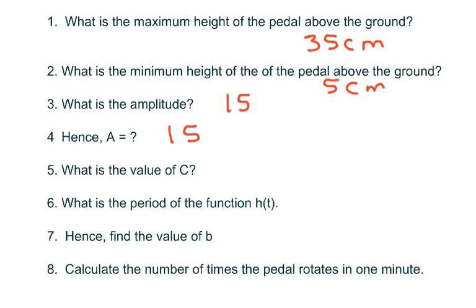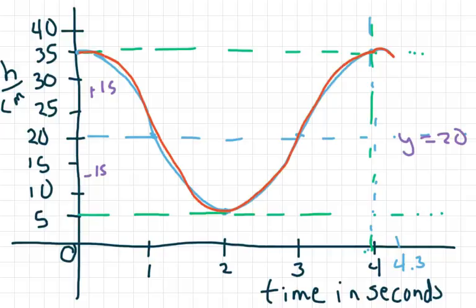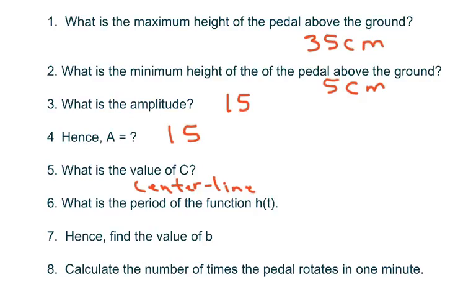And the value of C. Now, C, recall, is your new center line. Recall that cosine basically starts at 1 and goes down, so it's your vertical shift up. Our center line for cosine usually is at 0. Basically we shifted this up by 20 centimeters. So our C is at 20 or y equals 20.